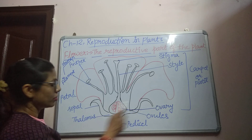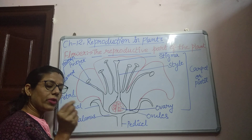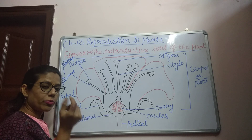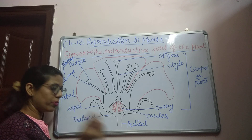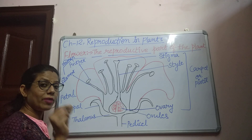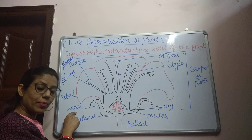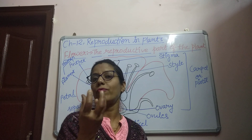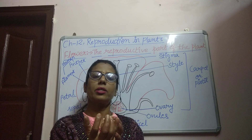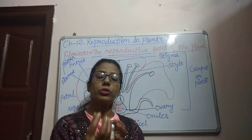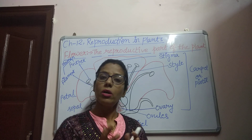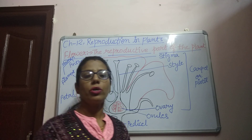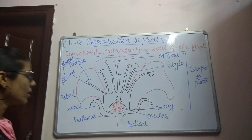Looking at the flower, you can see very small green leaf-like structures. These small leaf-like structures are known as sepals. The sepals protect the flower when it is in bud condition — they cover the petals completely so that the entire flower is protected. The number of sepals may be different in different flowers; it may be three, four, or more.